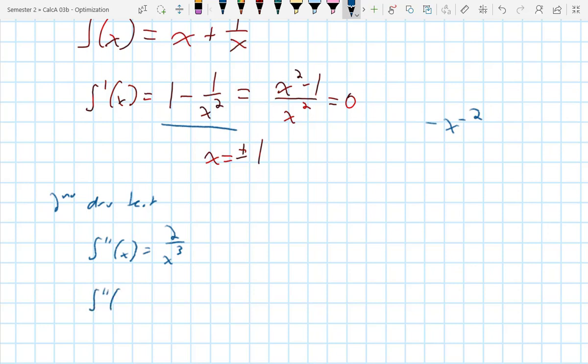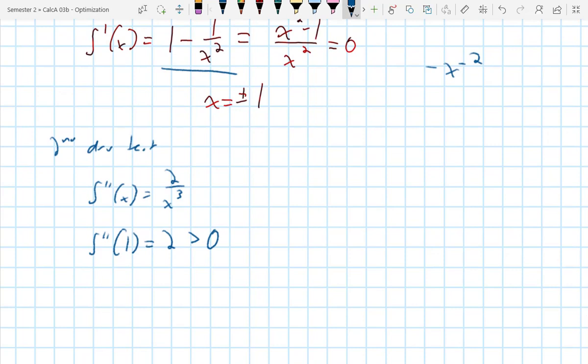So 2 over x cubed, I can then say s double prime of 1 is equal to 2, which is greater than 0. And s double prime of negative 1 is equal to negative 2, which is less than 0. In fact, you don't even need to say what it's equal to. You can just say greater than 0 or less than 0.